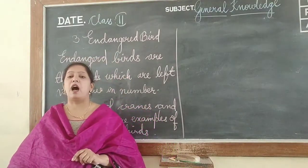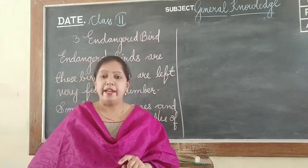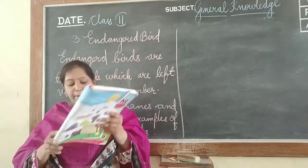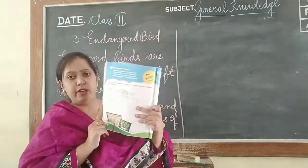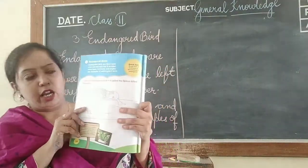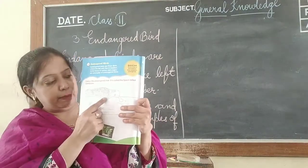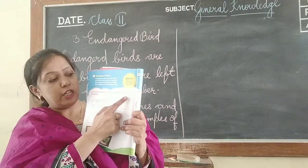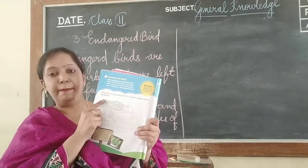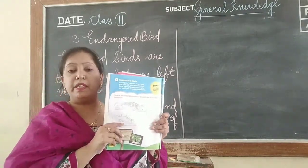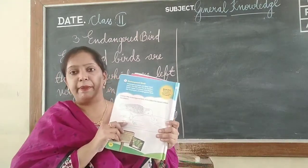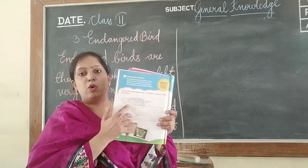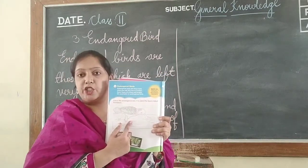Cranes and eagles are examples of endangered birds. On page number 226 there is an activity. You can see a bird here — you have to color this endangered bird. It is called the spoon-billed sandpiper. So, you have to color this bird.